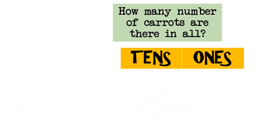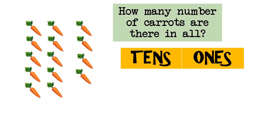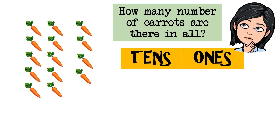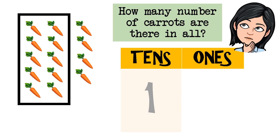How many number of carrots are there in all? Let us first group them in tens. Let's count! One, two, three, four, five, six, seven, eight, nine, ten. We have one set of tens.